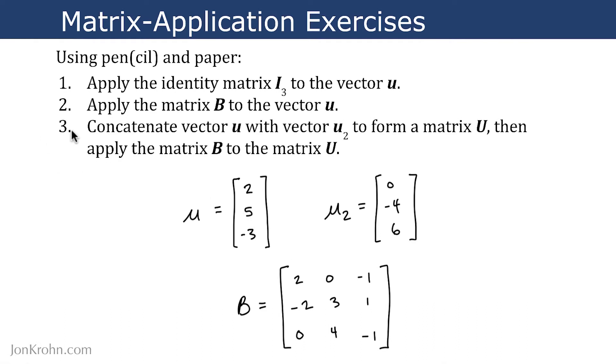For the third exercise, it's a little twist where we concatenate the column vector u and the column vector u2 together to form a matrix u that has two columns. And then apply the matrix B to that matrix u that you create.